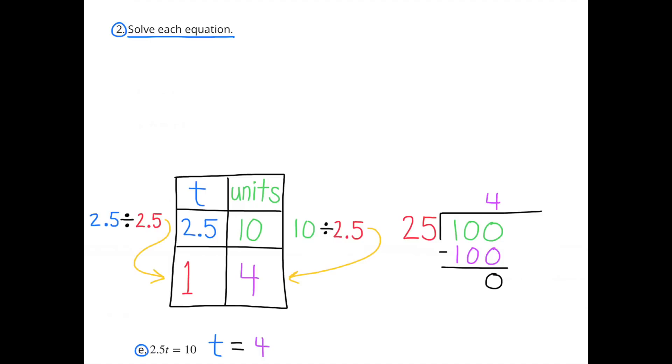Problem E: 2 and 5 tenths times t equals 10. I put the units on the right-hand side, and the number of t's on the left-hand side. So 2 and 5 tenths t's equals 10 units.